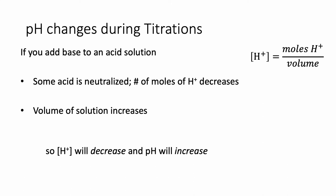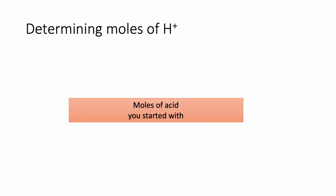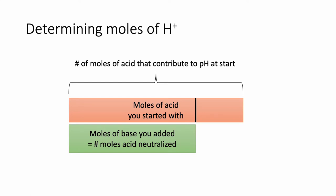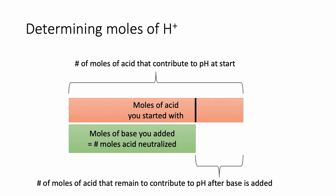That's a quick qualitative overview of how pH changes. Now let's talk about how to determine the number of moles of H+ we have. You can calculate the number of moles of acid you started with if you know the concentration, and all of those moles contribute to your starting pH. But as you go along, you're adding moles of base that neutralize some of those moles of acid. So the moles of acid left equals the moles of acid you started with minus the moles of base that were added.